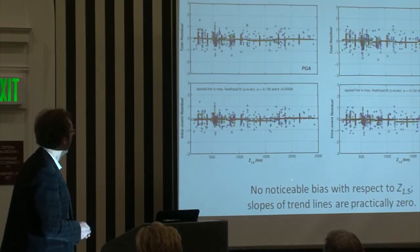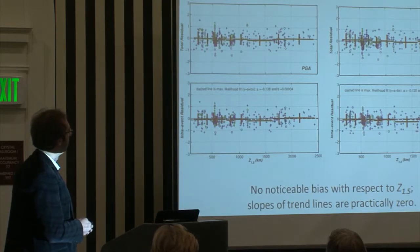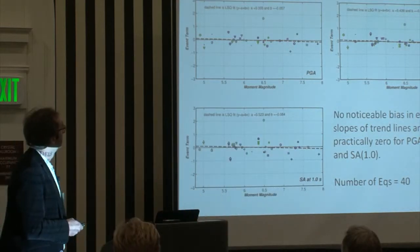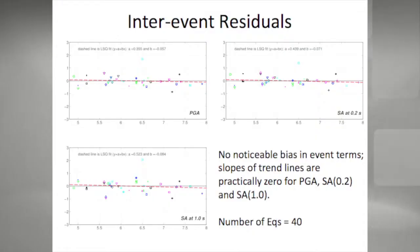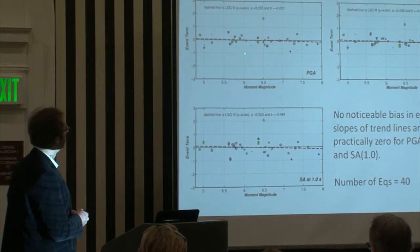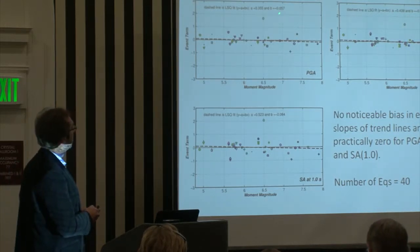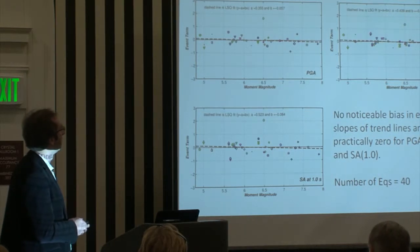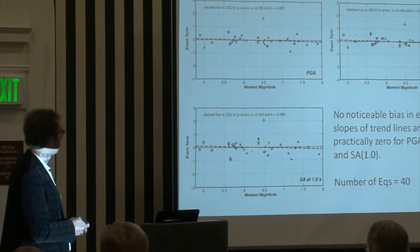This is for Z1.5 — again, our model is fitting very well to the data, and the slope for the intra-event residuals is almost zero. When we look at the event terms — intra-event residuals — we have about 40 earthquakes shown for PGA, at 0.2 seconds, and spectral acceleration at 1 second. The slope is very close to zero, so we don't have any bias in any of the event terms or intra-event terms.